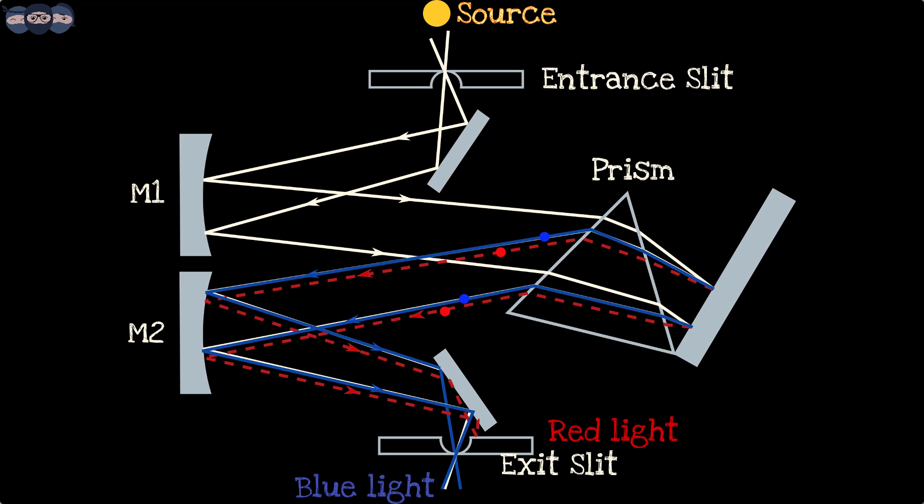Since the wavelengths are separated, they travel in different paths towards the slit and are focused at different locations. By moving the output slit, one can select the desired wavelength of light required by the application.